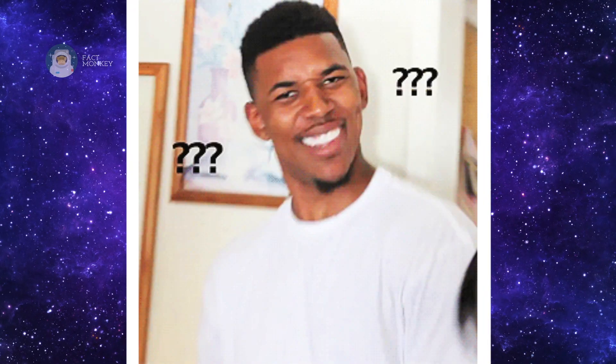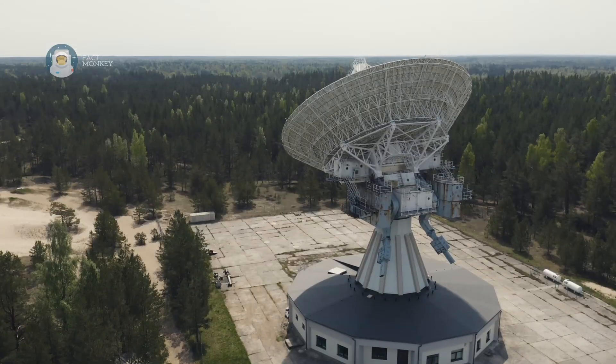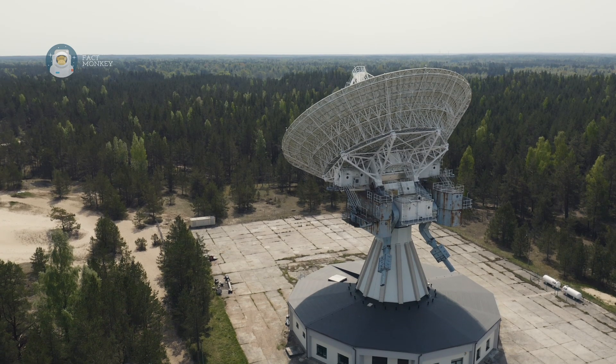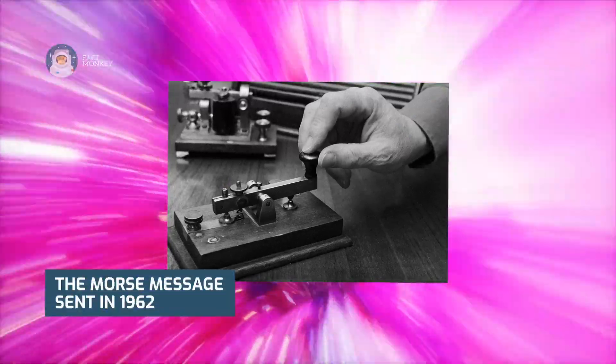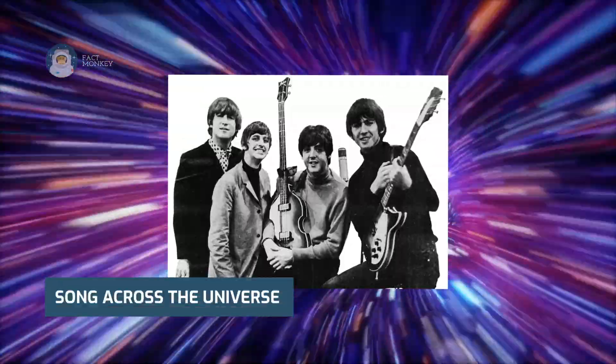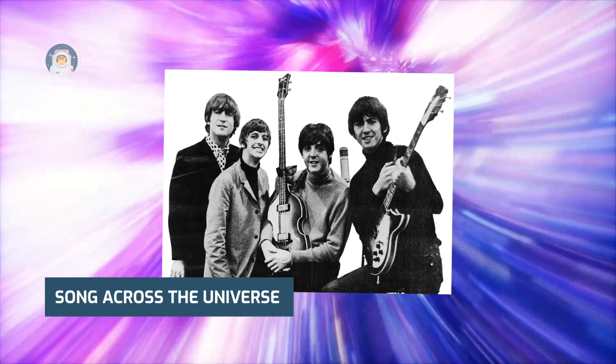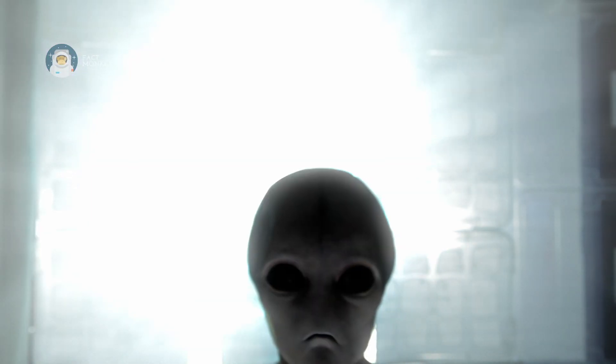You might be wondering what exactly did they do to try to prove the existence of aliens? Well, they sent radio signals several times throughout the years, either containing cryptic messages like the Morse message sent in 1962, or transmitting to them the Beatles song Across the Universe. And the most terrifying yet intriguing thing is, extraterrestrial beings once replied back.